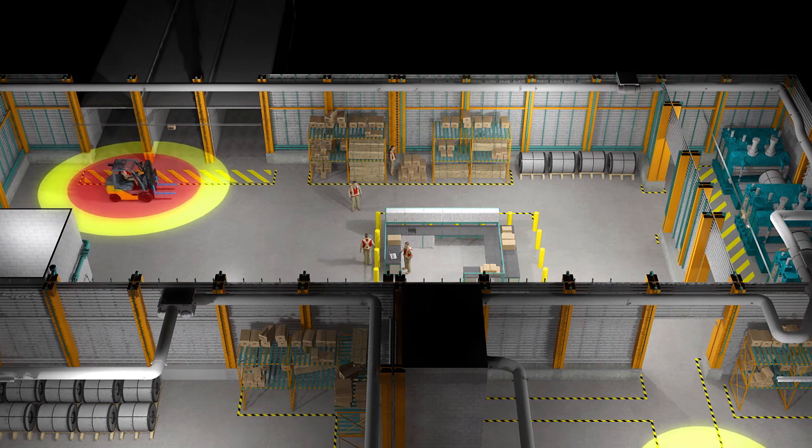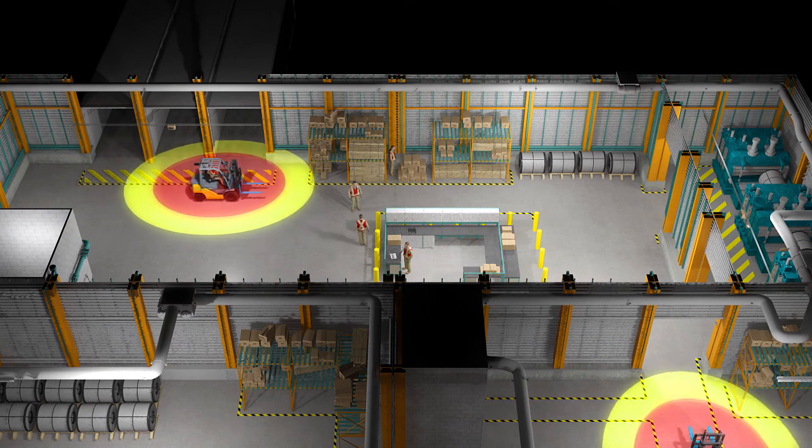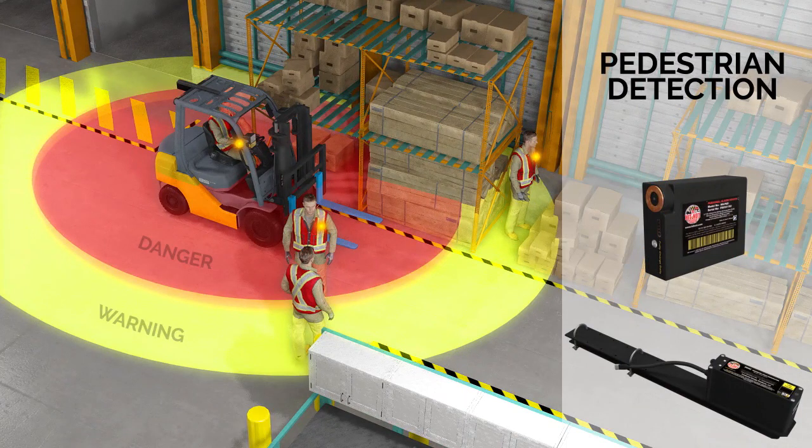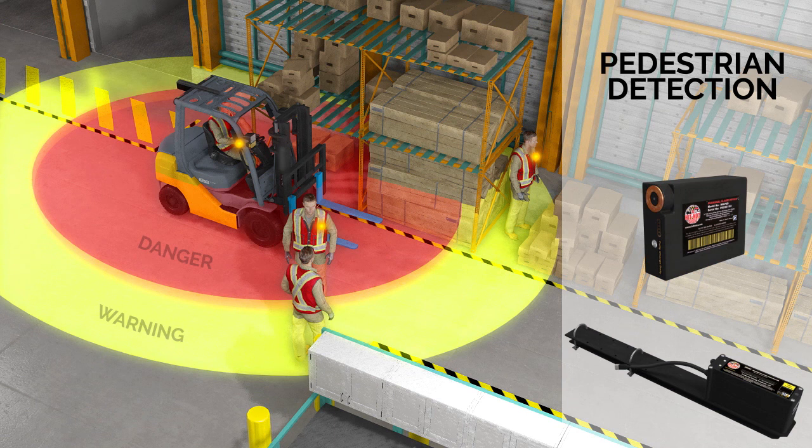The HITNOT magnetic fields are adjustable and create two precise zones, warning and danger. Users benefit from the audible and visual alerts given simultaneously to both the pedestrian and the mobile equipment operator. As shown,